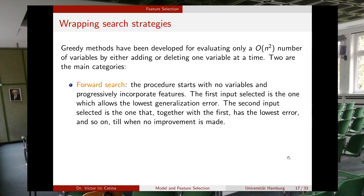To cope with the problem of having an exponential number of combinations of features, there are some algorithms that have been designed that run in n-squared complexity instead of exponential complexity. The basic idea is to add or delete one feature at a time.